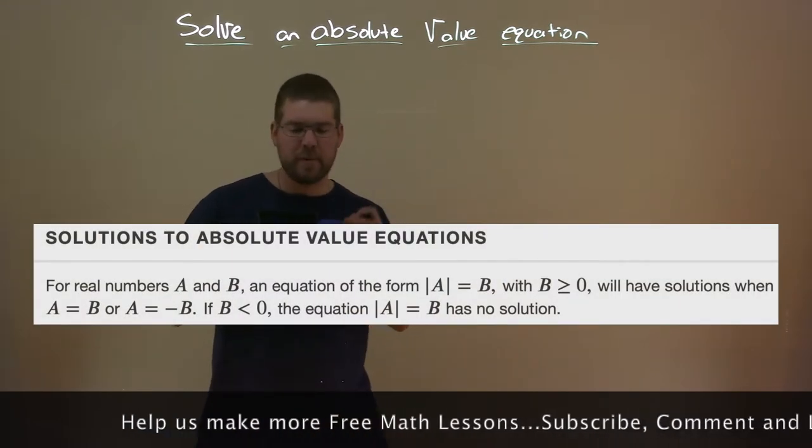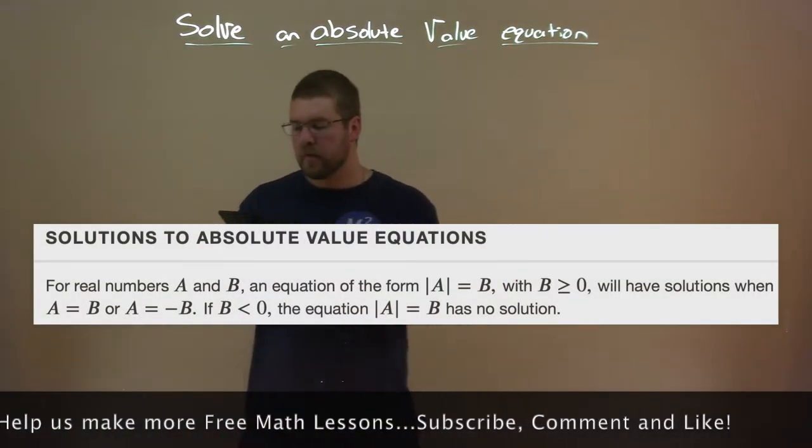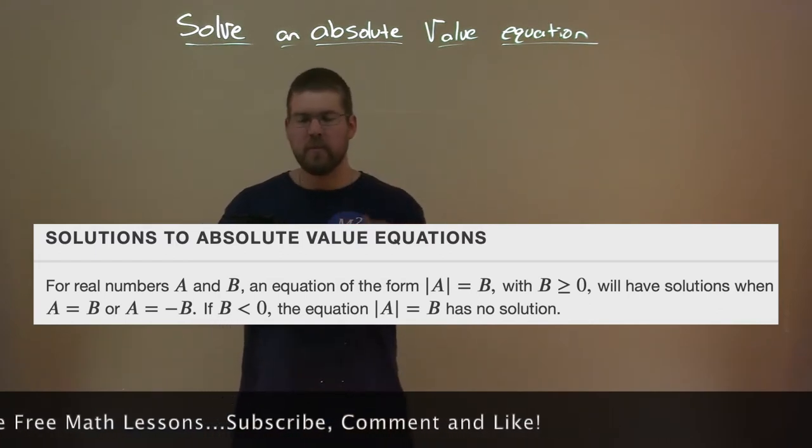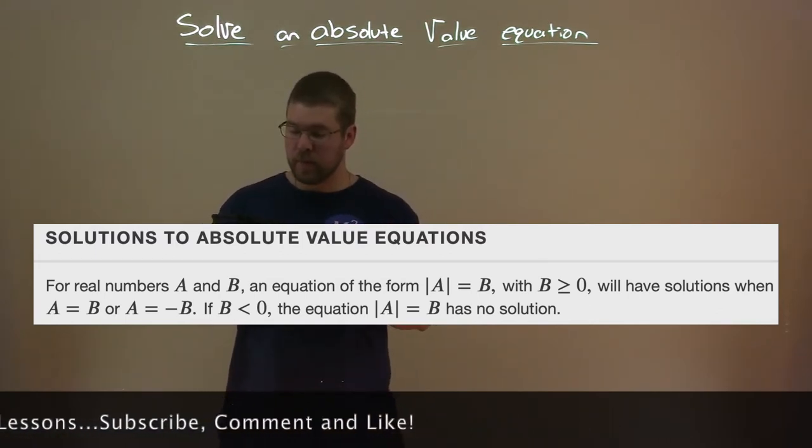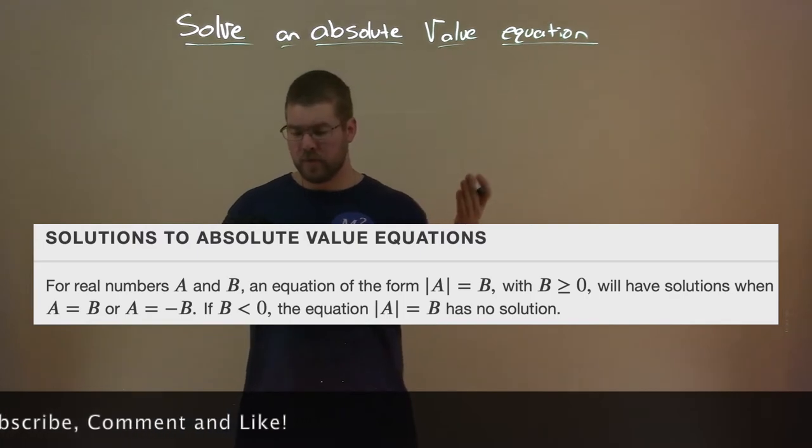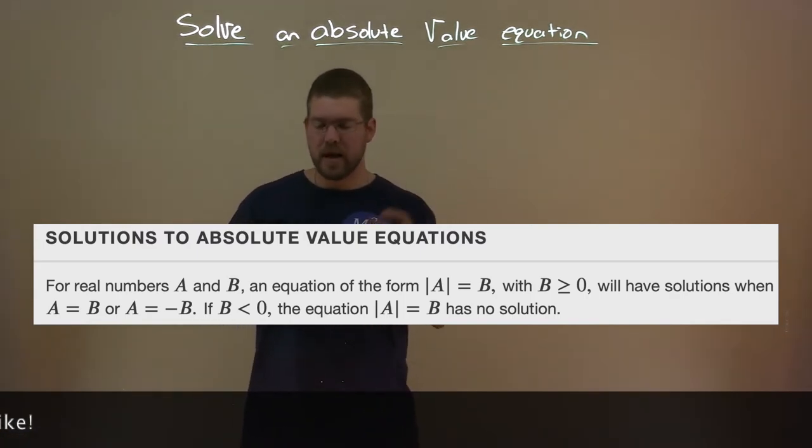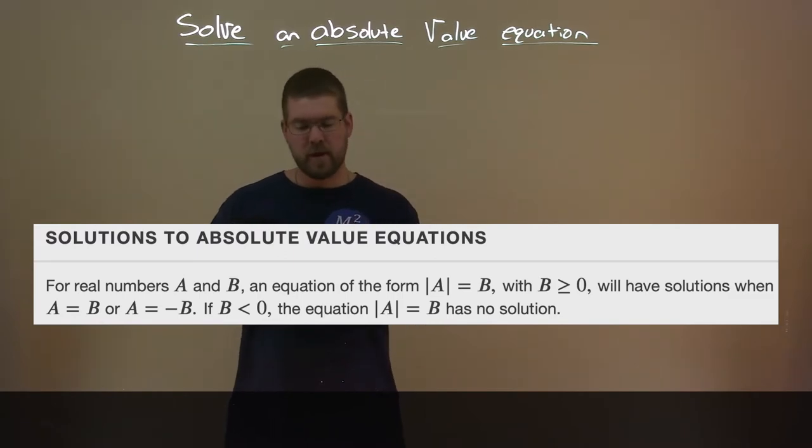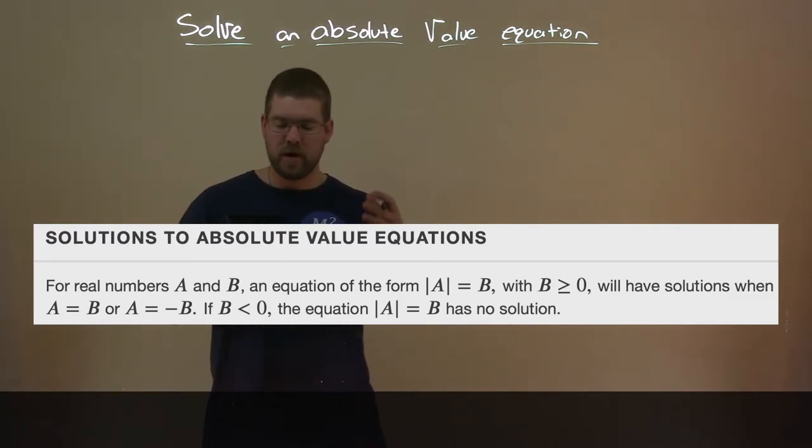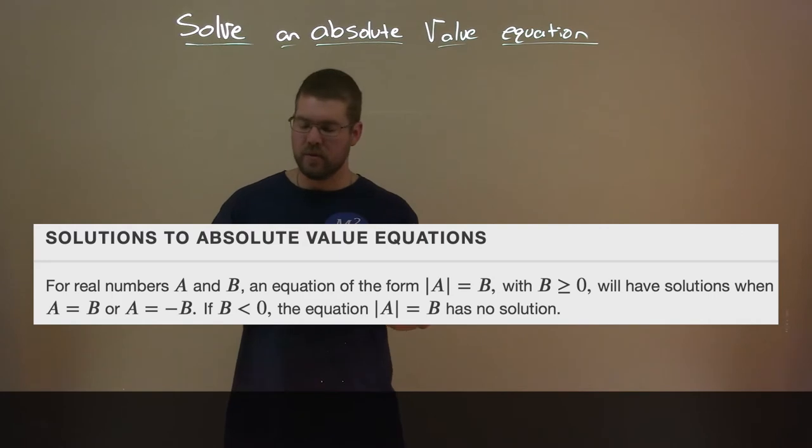Solutions to absolute value equations. For real numbers A and B, an equation of the form absolute value of A equals B with B greater than or equal to 0 will have solutions when A equals B or A equals negative B. If B is less than 0, the equation absolute value of A equals B has no solution.